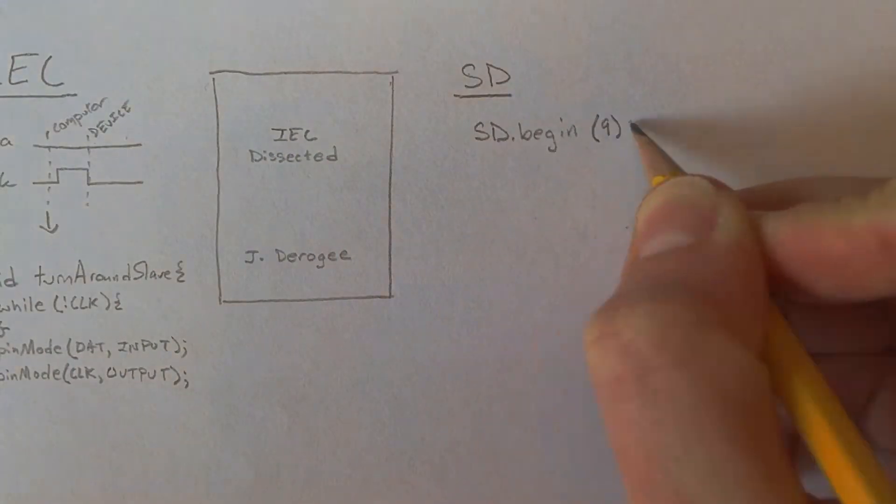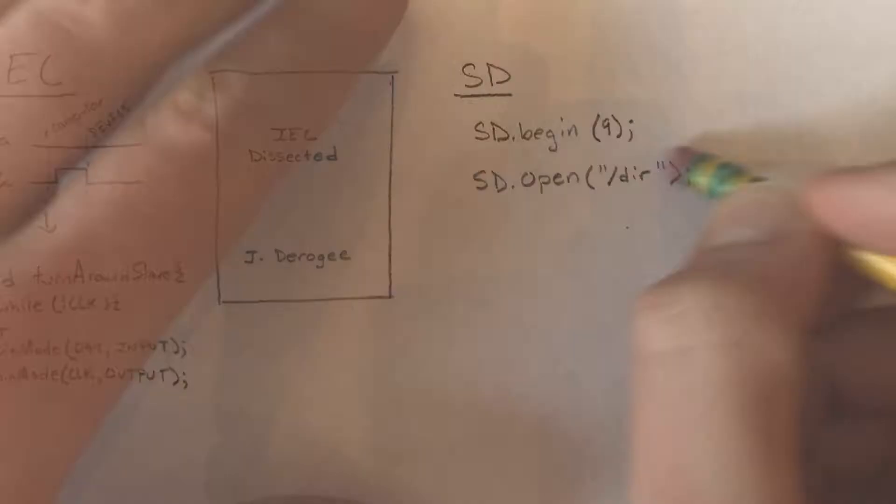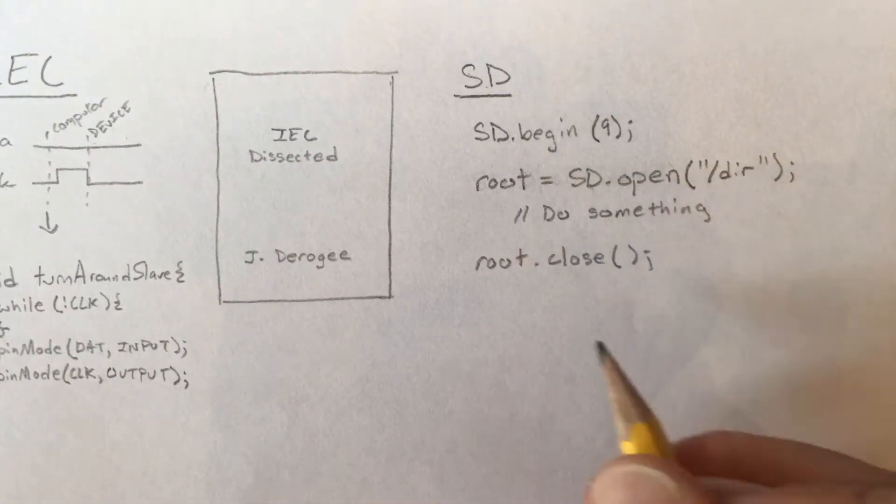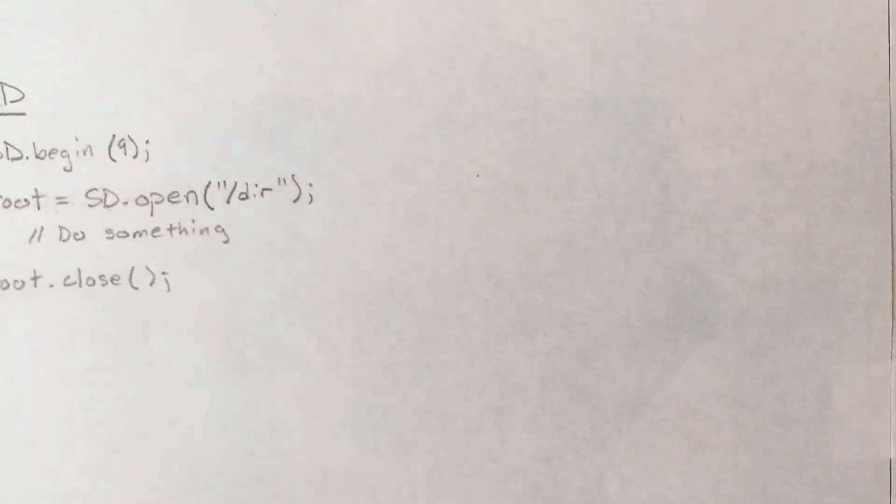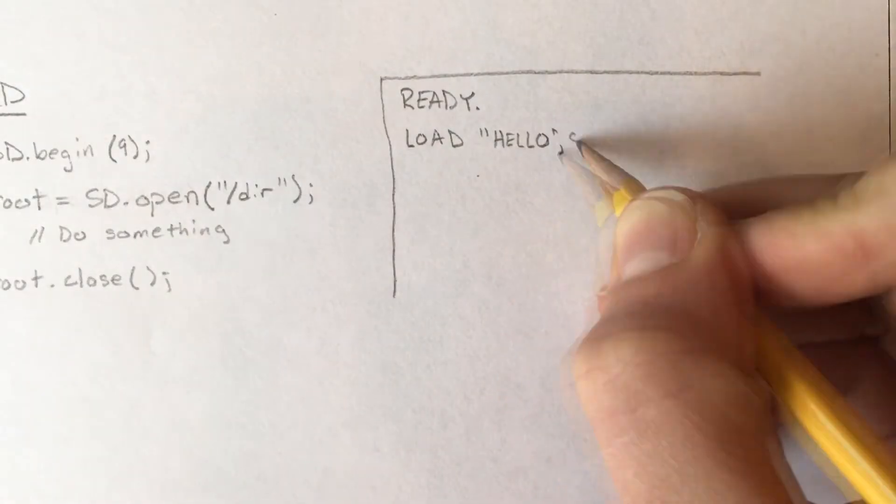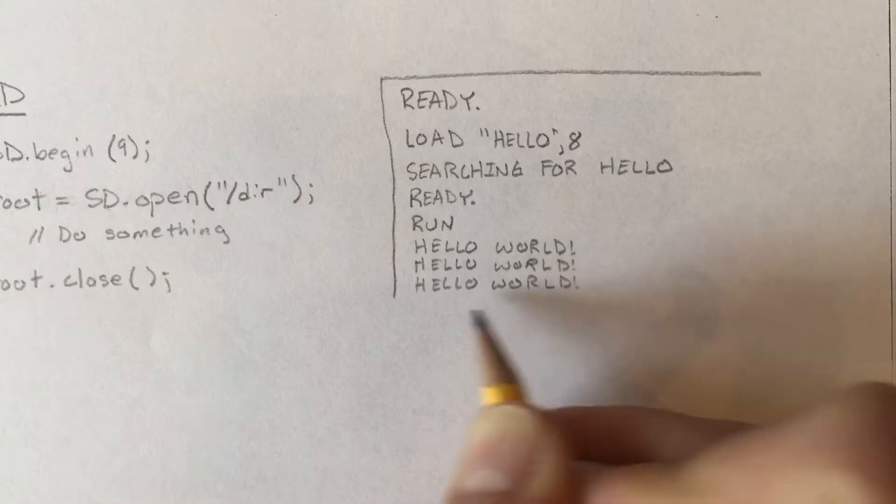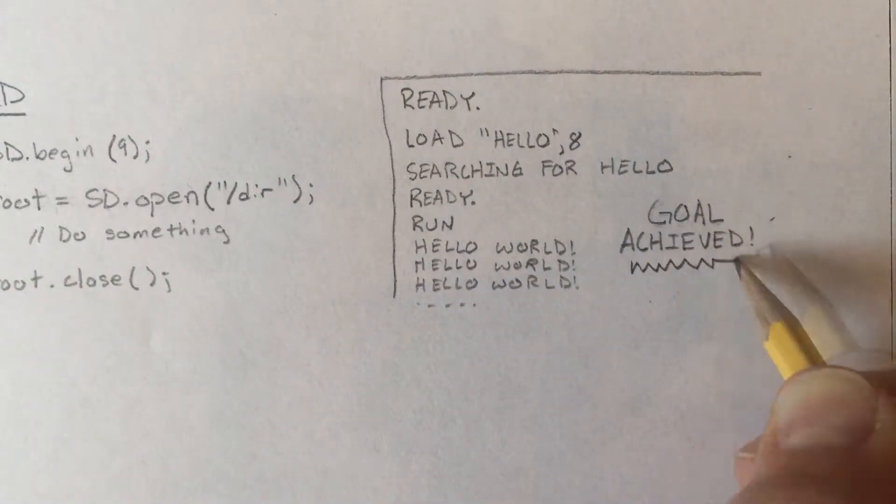Once I got the driver working, I moved on to reading a file from the SD card and sending it back to the computer. This part proved to be easier than I had expected, because there was already a built-in driver for it in the Arduino language. Through a few more hours of work, I was able to load and save programs to the disk, which means I had met my original goal, but I was wondering what other features the original disk unit had that I could potentially add.